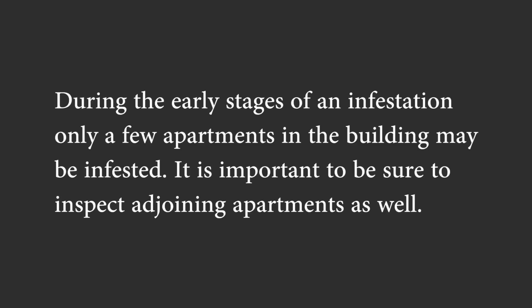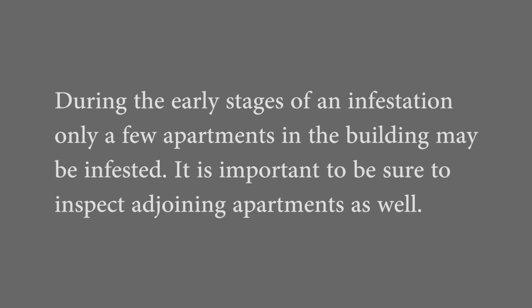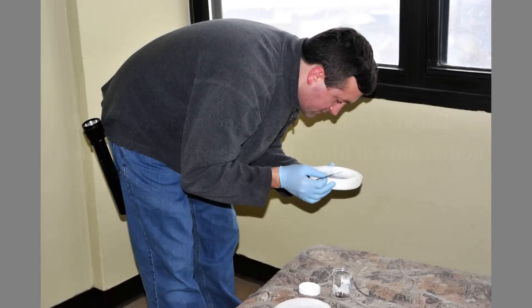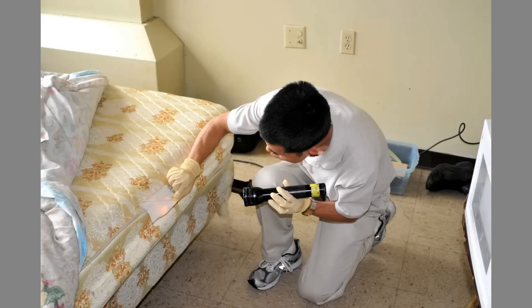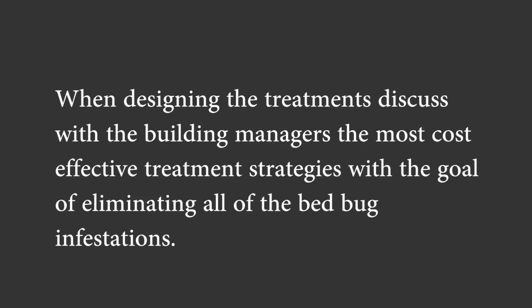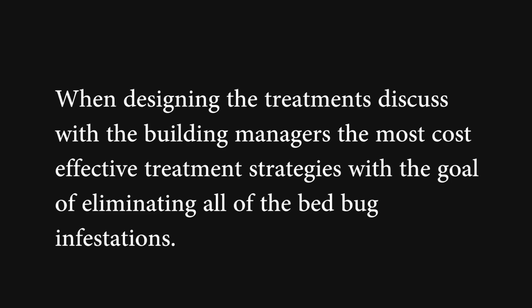During an early-stage infestation, only a few apartments in a building may be infested. Under these situations, the adjoining units in all directions of each infested unit should be inspected. Follow-up inspections of adjoining units should continue on a bi-weekly to monthly basis until the infestation in the primary unit is eliminated. When greater than 10% of the units in a building become infested, it is best to conduct a building-wide survey of all units at least once per year using a combination of interview, visual inspection, and monitors. Every infested unit that is identified needs to be treated, monitored on a bi-weekly schedule, and re-treated as necessary at each visit until elimination is confirmed. When designing the treatments, discuss with the building managers the most cost-effective treatment strategies with the goal of eliminating all bed bug infestations in a building within a short period of time.